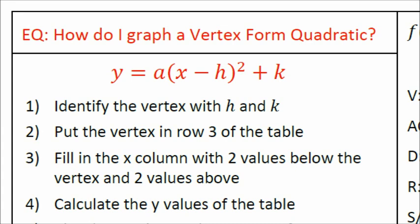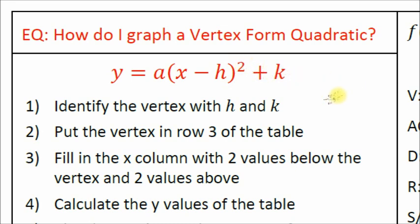The vertex is very obvious when the quadratic is in vertex form. Write your essential question and then write the vertex form of a quadratic: y equals a times (x minus h) squared plus k. Here are your steps.